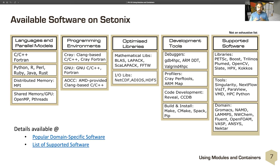The available software on Cetonix covers a large range. In terms of languages and parallel models, we still have compilers for C, C++, and Fortran, plus Python, R, Perl, Ruby, Java, and Rust. Distributed memory programs will use MPI; there's also OpenMP and Pthreads for shared memory. The Cray programming environment has moved to a Clang-based C and C++ compiler but still provides their bespoke Cray Fortran compiler. There's also the GNU programming environment and AOCC — AMD optimized compilers. Optimized libraries include BLAS, LAPACK, ScaLAPACK, FFTW, NetCDF, ADIOS, and HDF5.